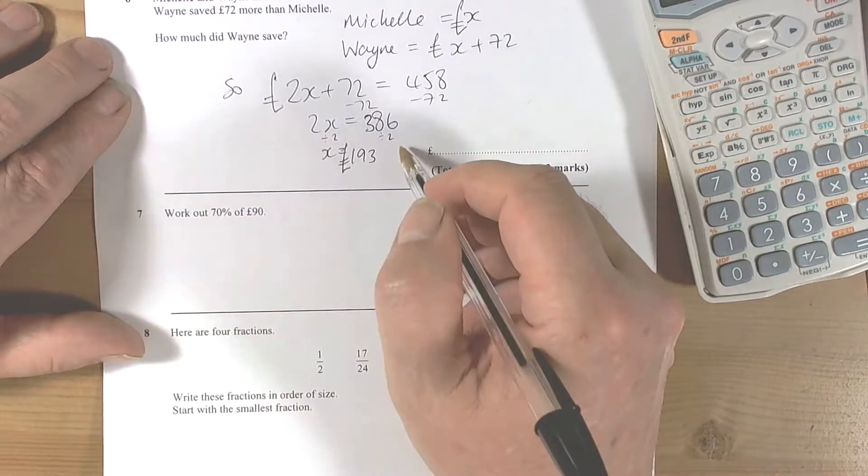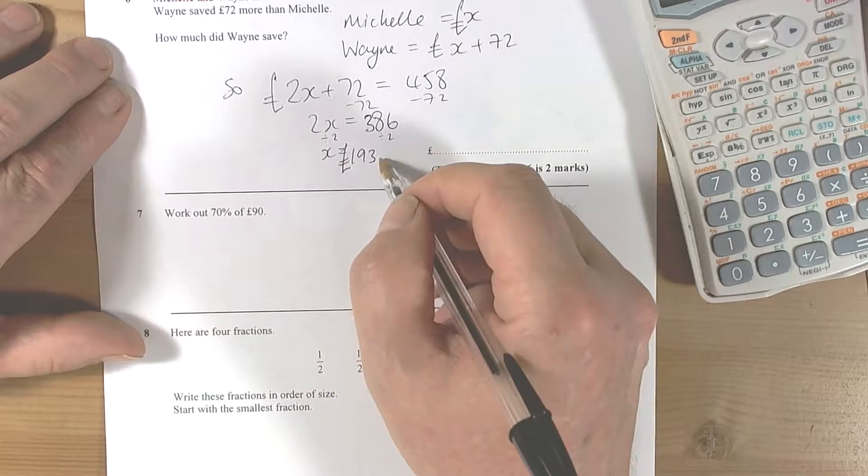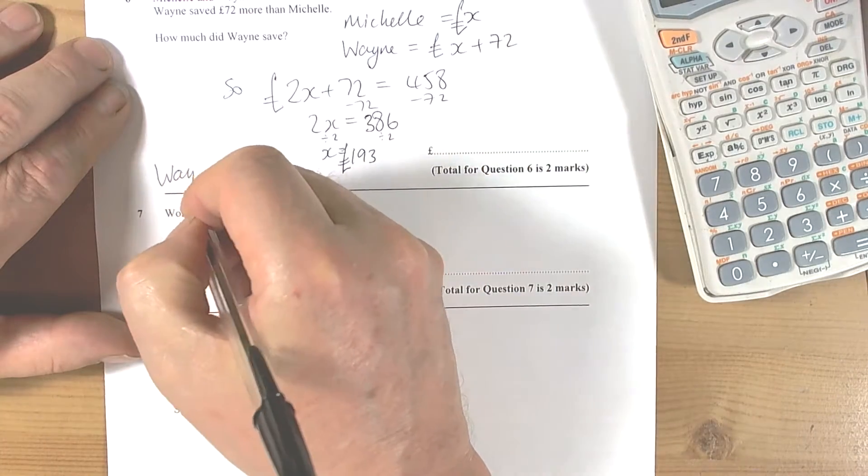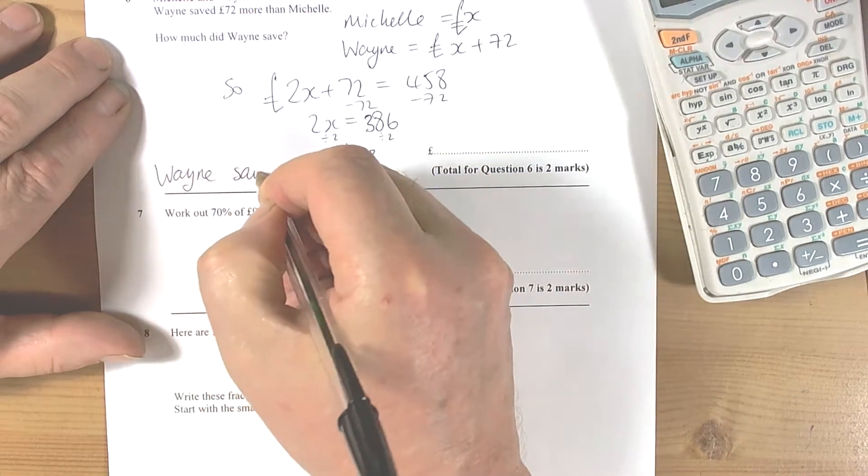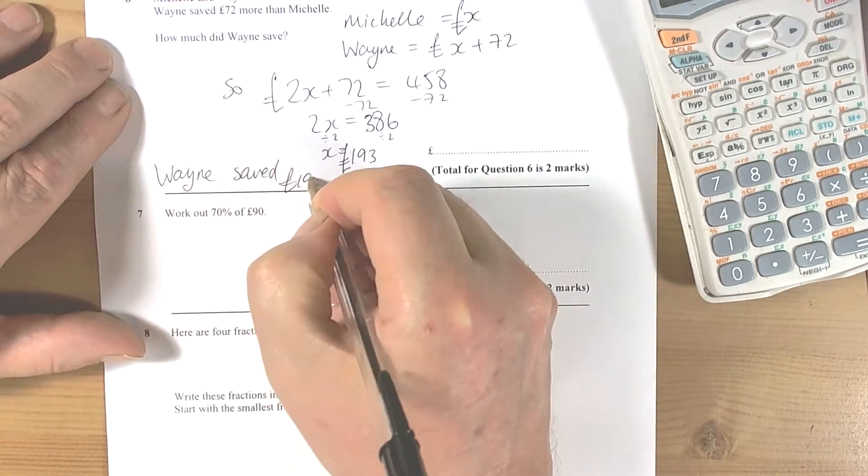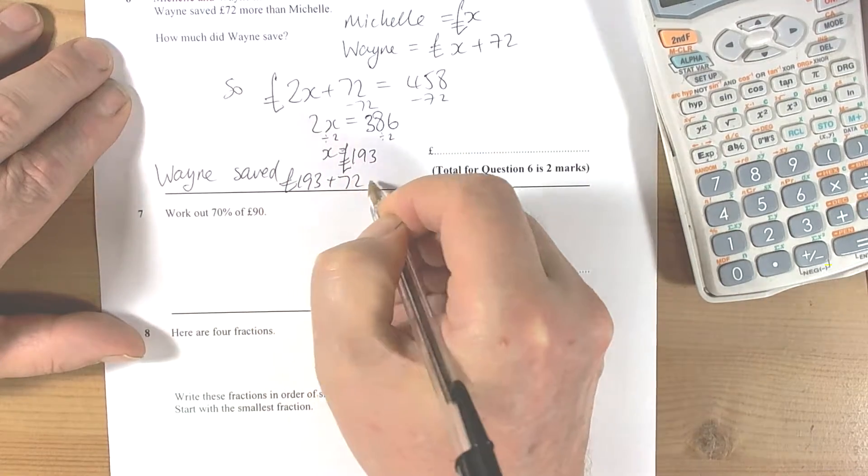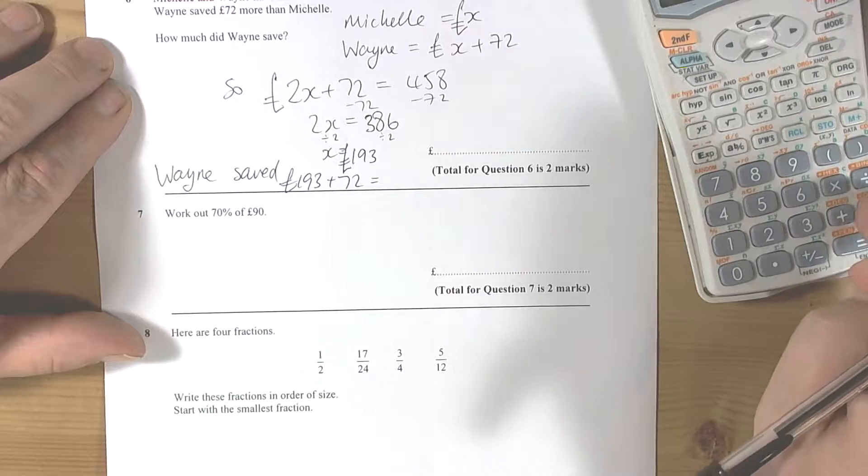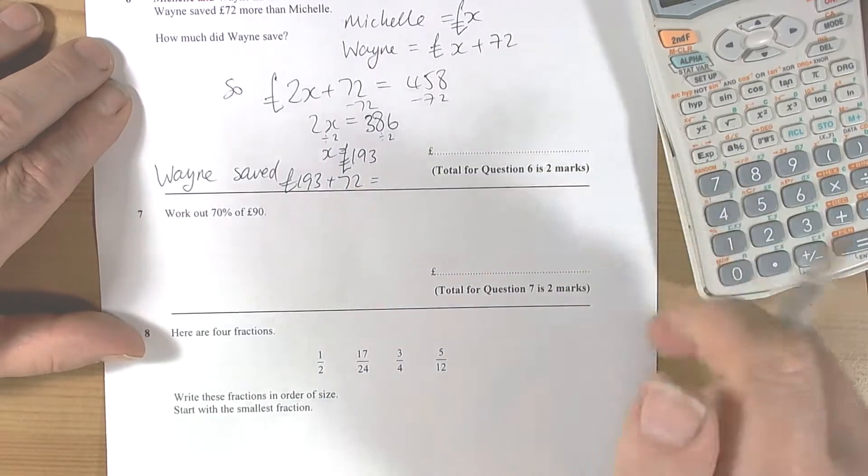So Michelle is 193 pounds. Wayne saved 193 plus 72, so plus 72 equals 265.